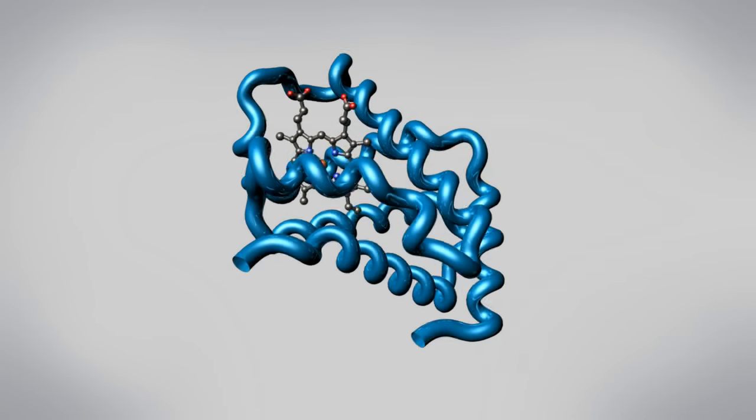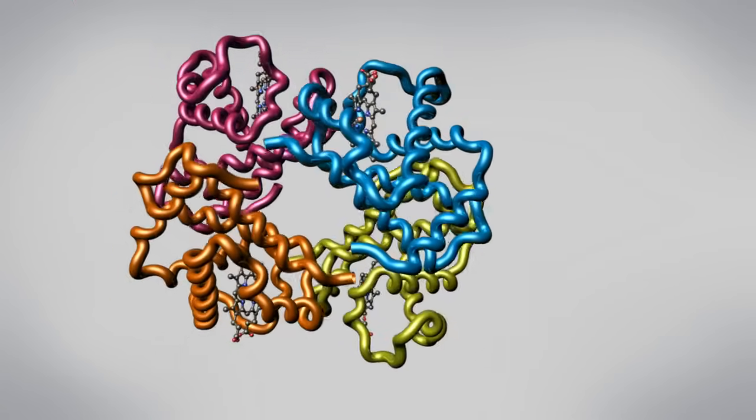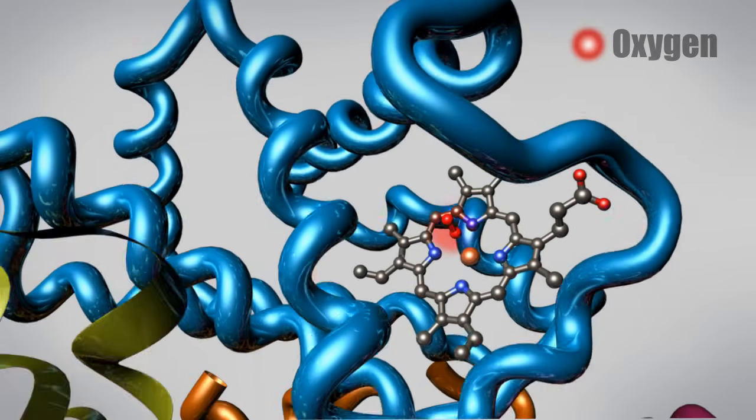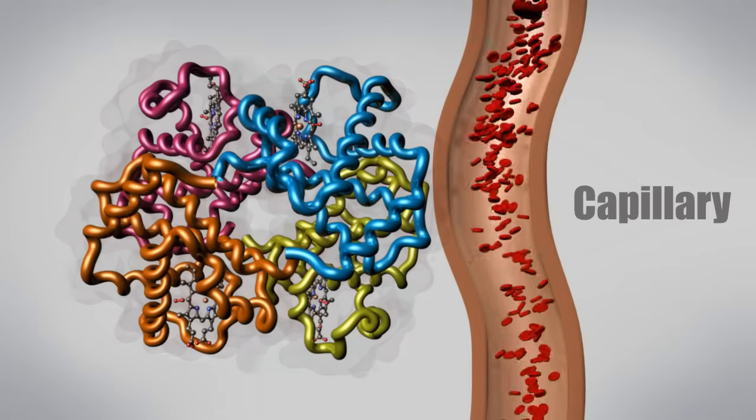Two or more polypeptide chains can come together to form one functional molecule with several subunits. The four subunits of hemoglobin cooperate so that the complex can pick up more oxygen in the lungs and release it in the body.